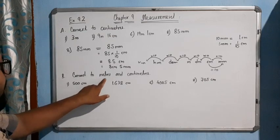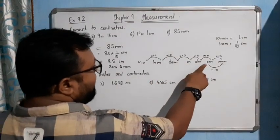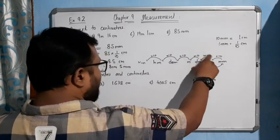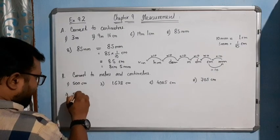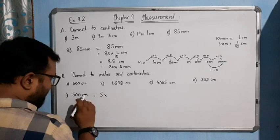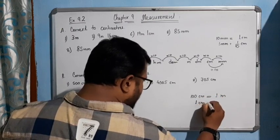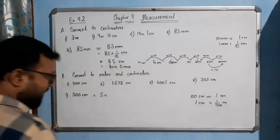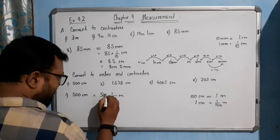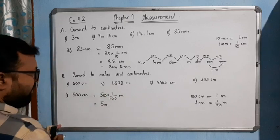Now come to Question B — converting centimeters to meters. For 500 centimeters: remember 100 centimeters equals 1 meter, so 1 centimeter equals 1/100 meter. Therefore 500 centimeters times 1/100 gives you 5 meters. Is that clear? Very simple.